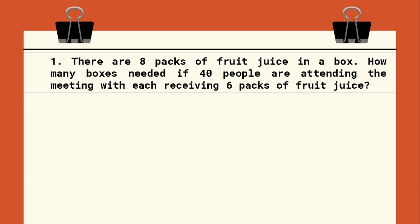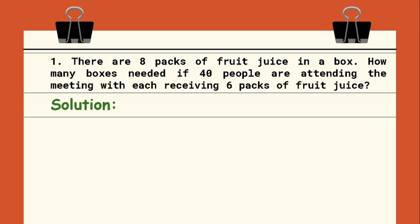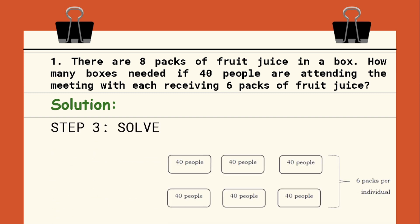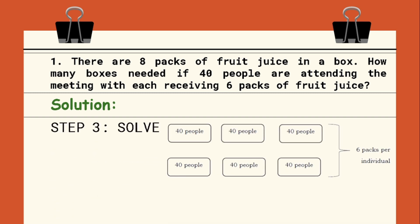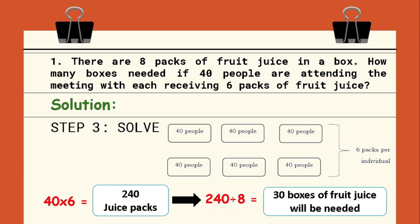For our last step, we will now solve the problem. We have 40 people with each receiving 6 packs of fruit juice, so 40 times 6 is equal to 240 juice packs. Also, each box contains 8 packs of fruit juice, so we will divide 240 by 8 which gives us 30 boxes of fruit juice. And that answers the unknown quantity in our problem.